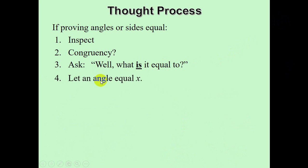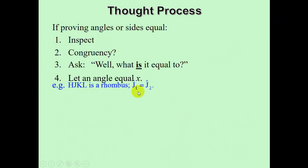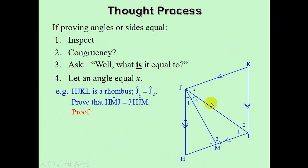A good technique when things get difficult is to let an angle equal to X. In this problem we are given a rhombus, and we are given J1 equal to J2. We need to prove that angle HMJ is equal to 3 times angle HJM.